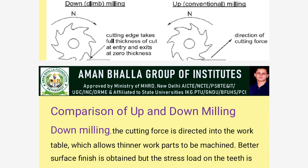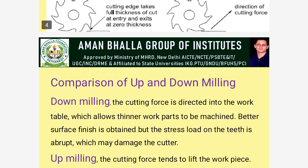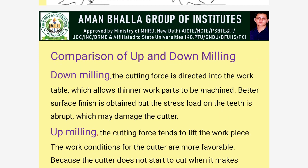Next is the comparison between up and down milling. In down milling, the cutting force is directed into the work table, which allows thinner work parts to be machined and a better surface finish is obtained. However, the stress load on the cutter is abrupt, which may damage the cutter.